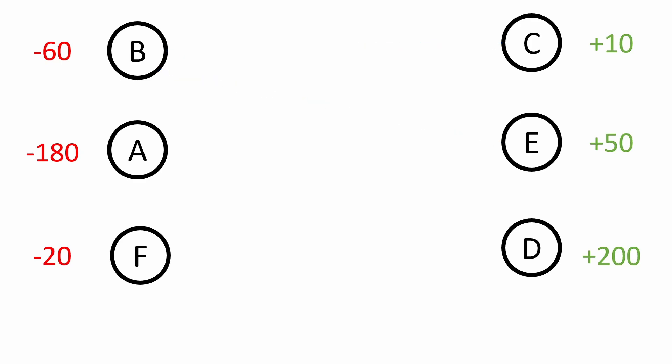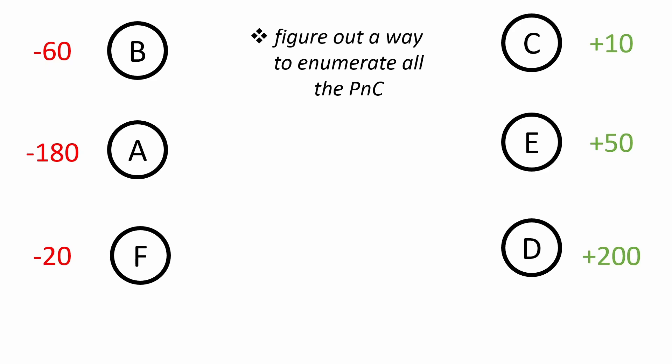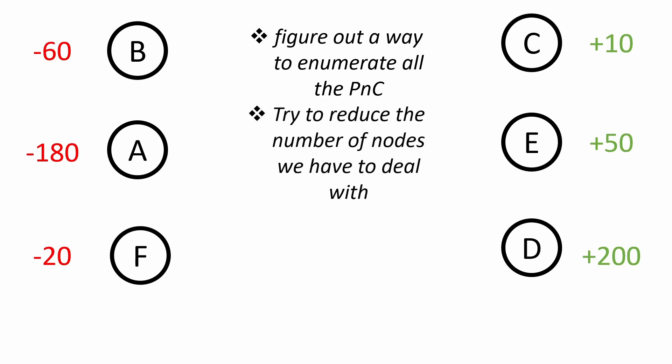What we're doing is enumerating all permutations and combinations, since we don't know at any given point which is best. We use backtracking to enumerate every single possibility. The goal at each step is to reduce the number of nodes we have to deal with — at each point we try to satisfy a node and remove it from the graph. With these two points in mind, we can go ahead and code the solution.